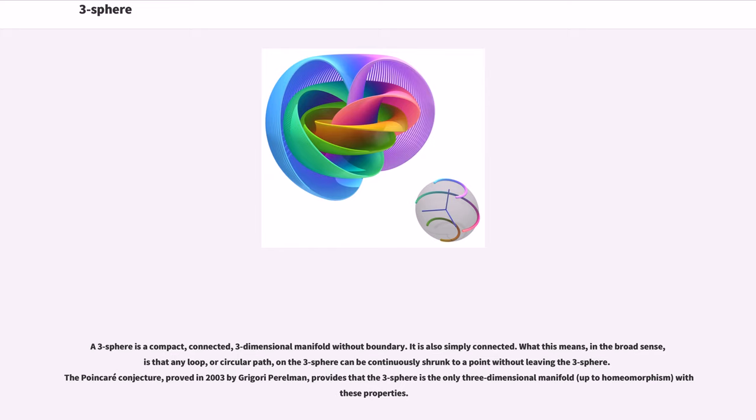Then the two-sphere shrinks again down to a single point as the three-sphere leaves the hyperplane. A three-sphere is a compact, connected, three-dimensional manifold without boundary. It is also simply connected. What this means, in the broad sense, is that any loop, or circular path,